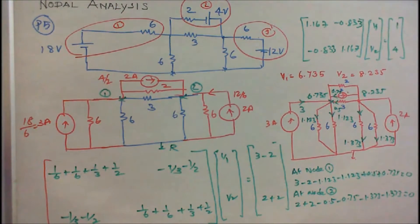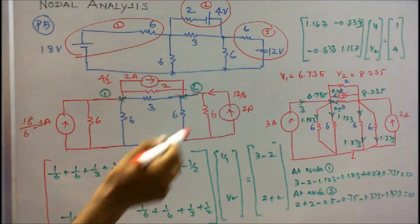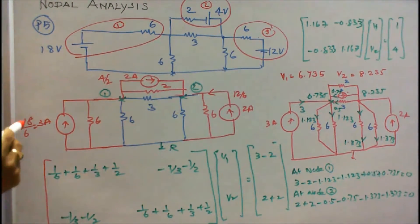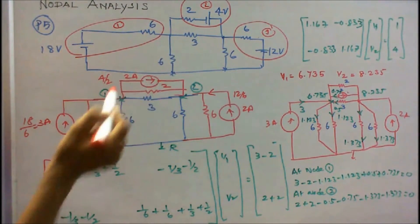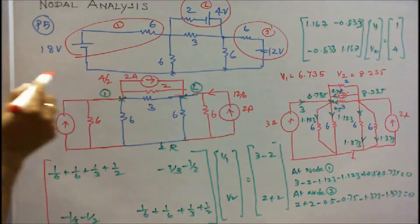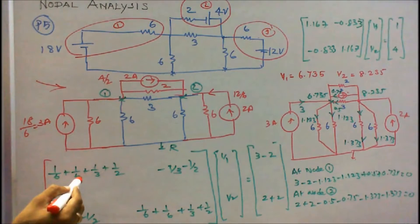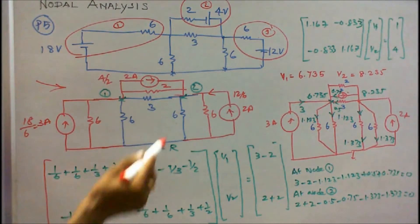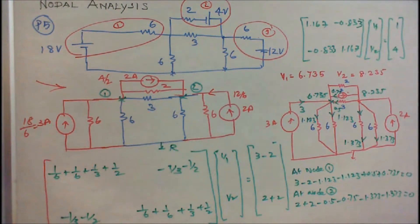Problem number 5: six resistances and three voltage sources connected as shown. The question is to find the current in the 3 ohm and 2 ohm resistors. First, convert: 18V and 6 ohm into a current source (18/6 = 3 amps, 6 ohm in parallel); 4V and 2 ohm into a current source (4/2 = 2 amps, 2 ohm in parallel); 12V and 6 ohm into a current source (12/6 = 2 amps, 6 ohm in parallel). Redrawn circuit matrix: diagonal — node 1: 1/6+1/6+1/3+1/2; node 2: 1/6+1/6+1/2+1/3. Common elements: -1/3 and -1/2.